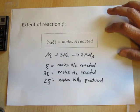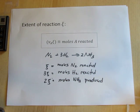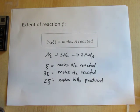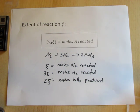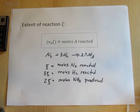Having this quantity Xi that gives us the moles of a species produced or consumed in a reaction allows us to make mass balance calculations in a very organized way when a chemical reaction is taking place.